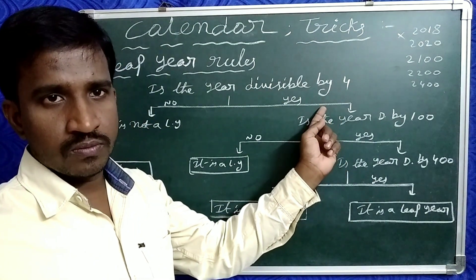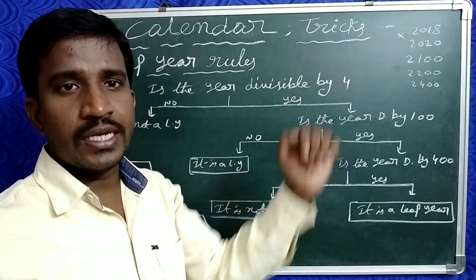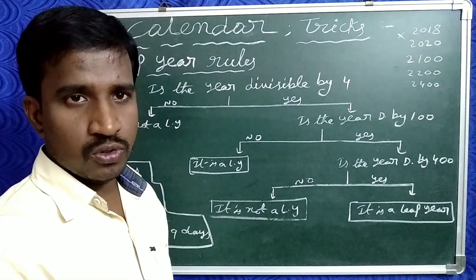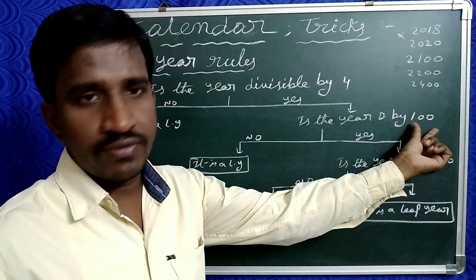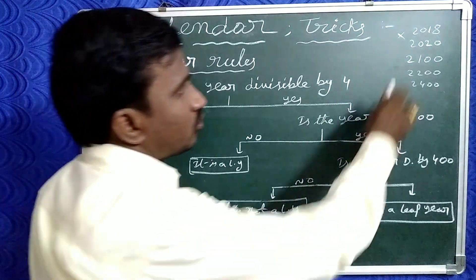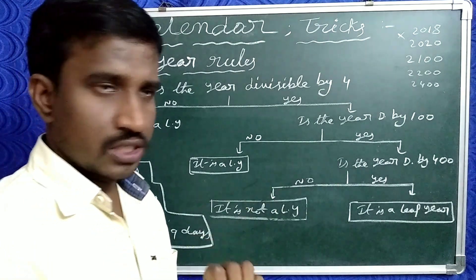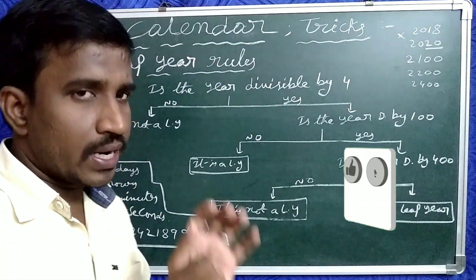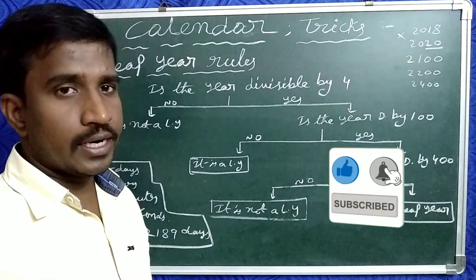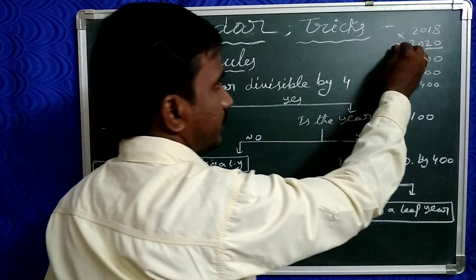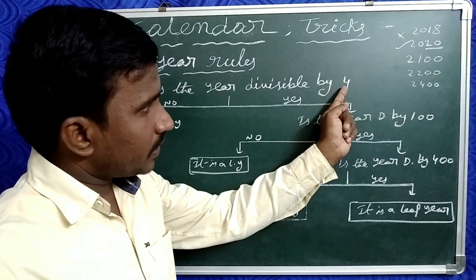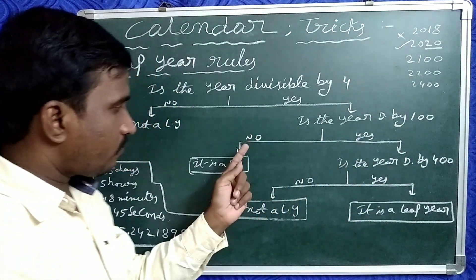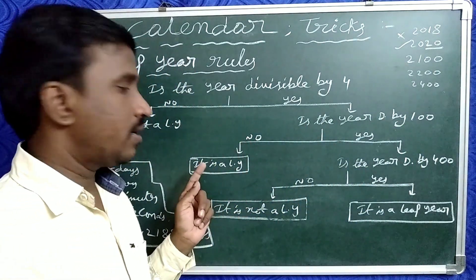Suppose it is divisible by 4. After completion of division by 4, again divide by 100. If it is not divisible by 100, then it is a leap year. For example, 2020: the last two digits 20 are exactly divisible by 4, and 2020 is not a multiple of 100, so it is a leap year.